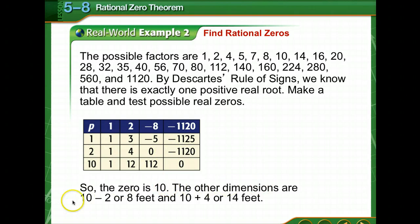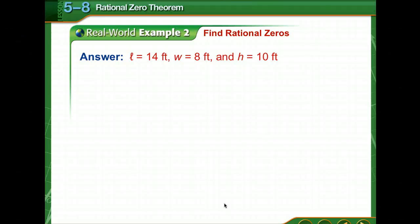The zero is 10 and the other dimensions are 10 minus 2 or 8 and 10 plus 4 or 14. So our length is 14, our width is 8, and our height is 10.